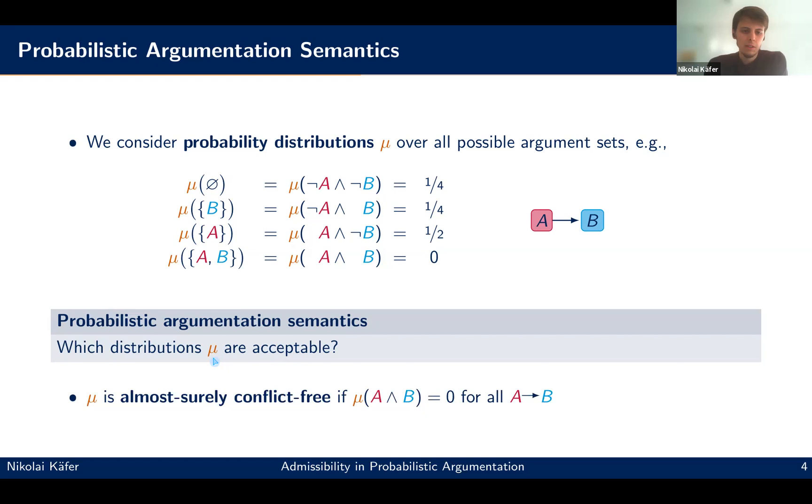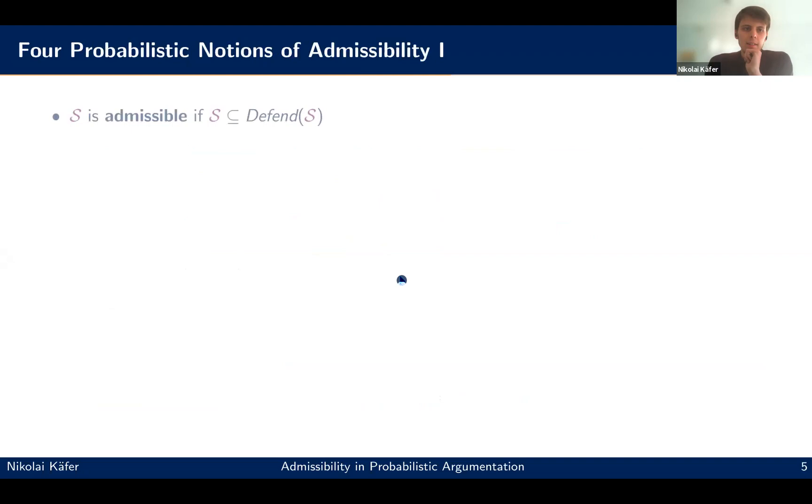And the notion of conflict-freeness, which we saw before, we can just lift it here into the probabilistic setting. And then we call it almost surely conflict-free, and we require here that if there is an attack from A to B, then the probability of both A and B holding at the same time needs to be zero. So the distribution we have here is almost surely conflict-free.